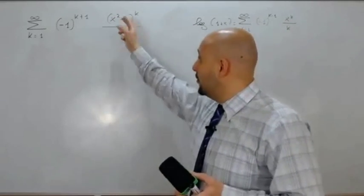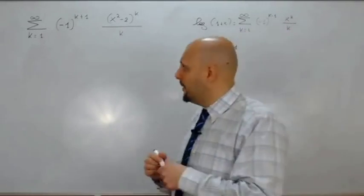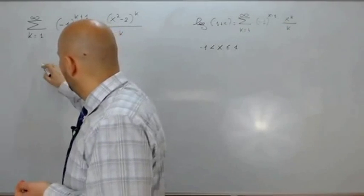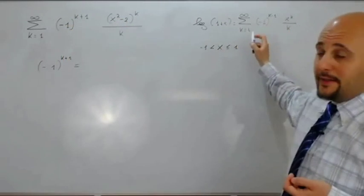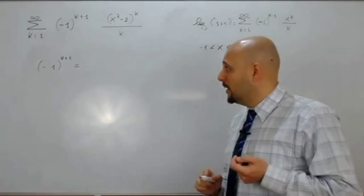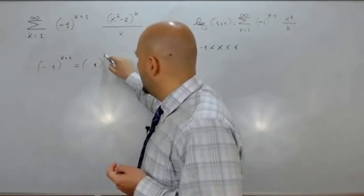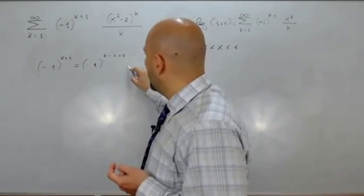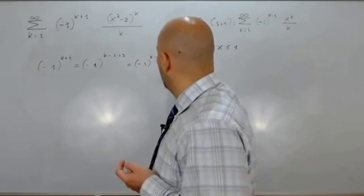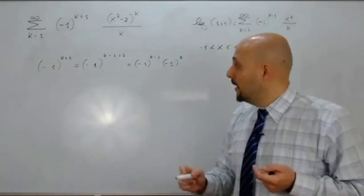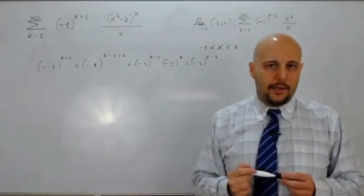Il nostro x è il nostro x quadro meno 2. Notiamo che meno 1 alla k più 1 è uguale a meno 1 alla k meno 1. Scriviamo meno 1 elevato a k meno 1 più 2: per proprietà delle potenze, questo è meno 1 alla k meno 1 che moltiplica meno 1 al quadrato, ma meno 1 al quadrato è 1. Quindi meno 1 alla k più 1 equivale a meno 1 alla k meno 1.